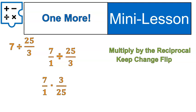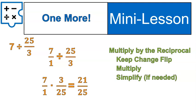Multiply straight across like normal. 7 times 3 is 21. 1 times 25 is 25. And 21 over 25 doesn't have any common factors, so it doesn't need to be simplified. That's it.